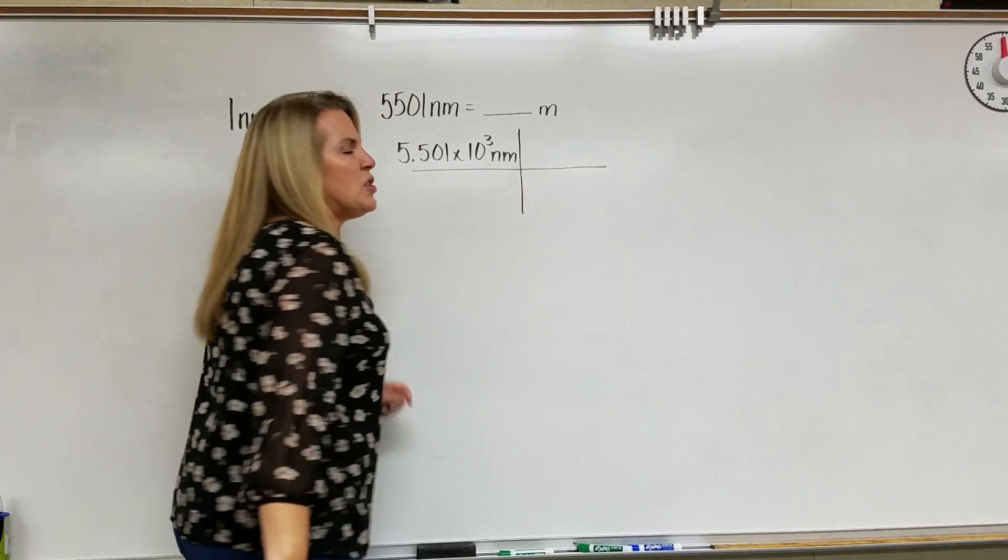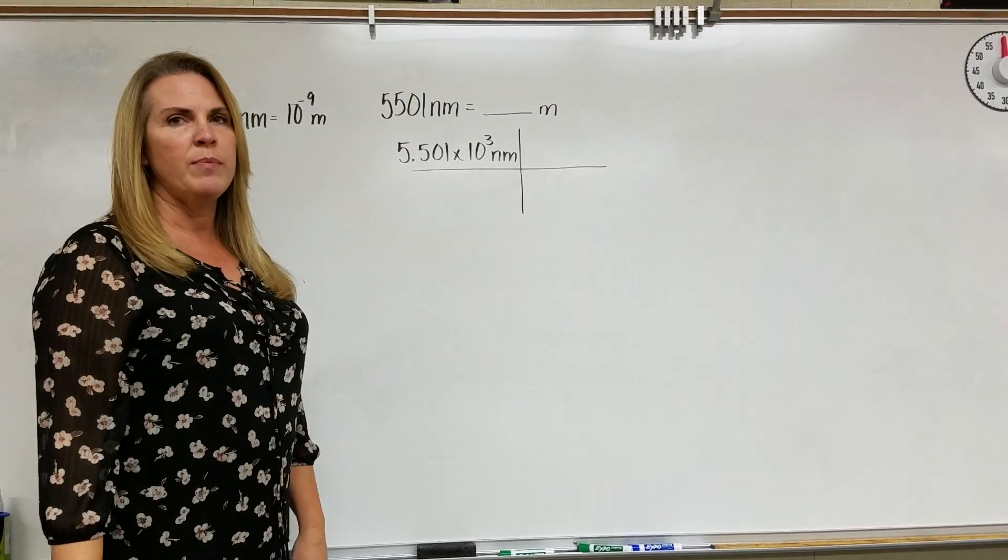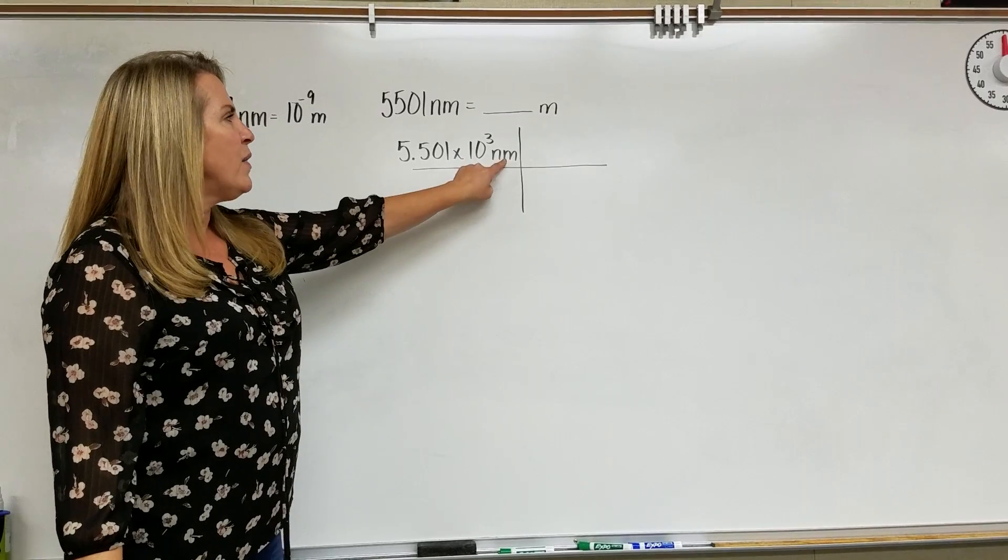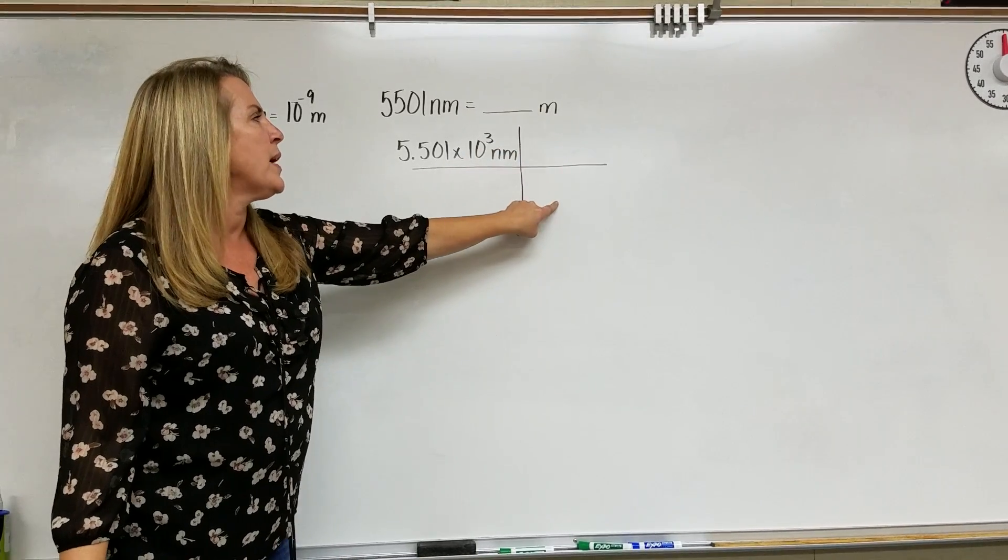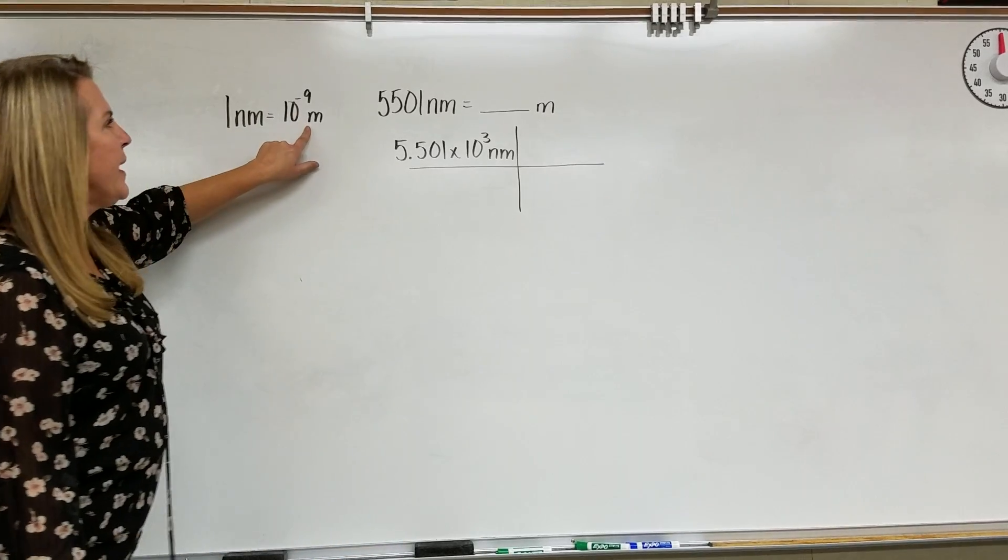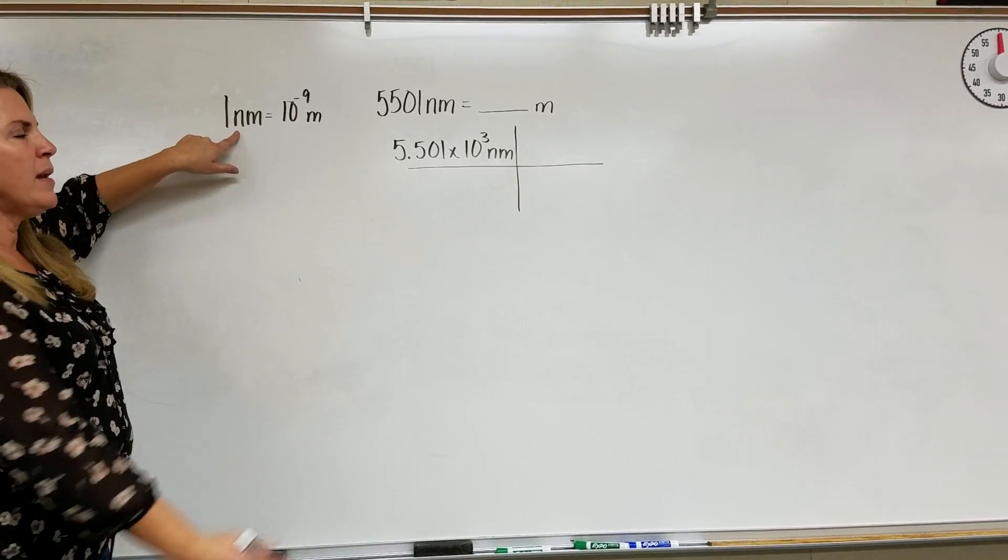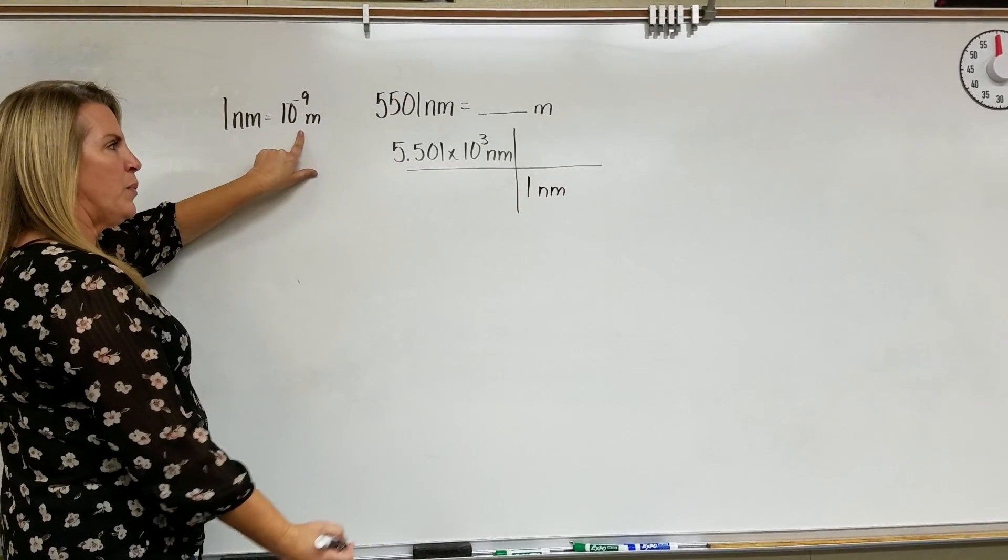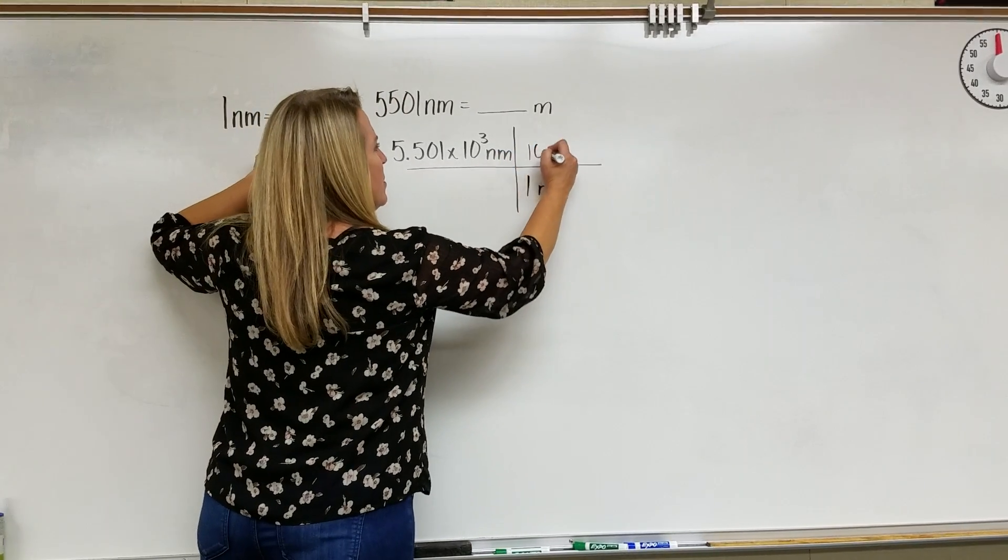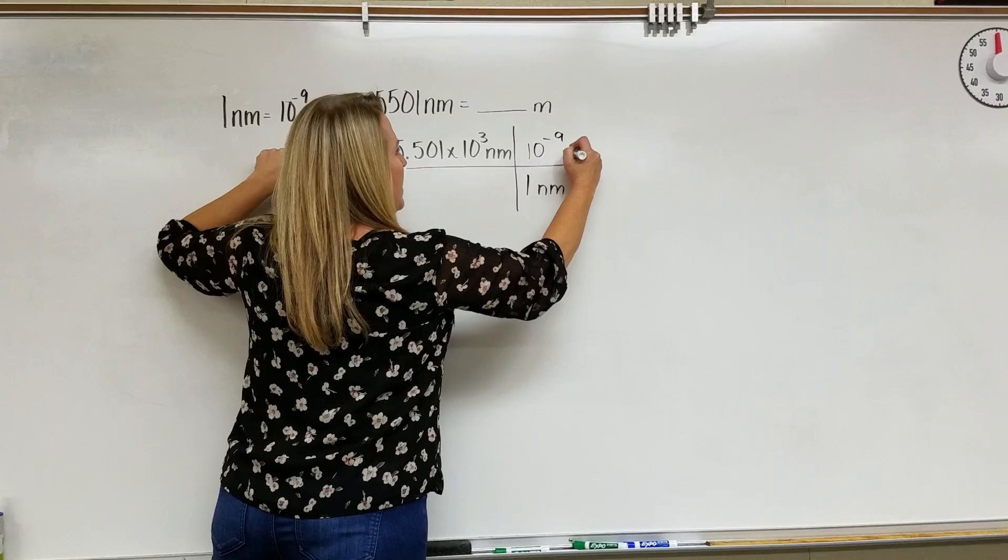Now that we have our relationship, we have a way to convert from nanometers to meters. If we have nanometers upstairs, this unit is driving what's going to go down here. So we will take our one nanometer downstairs and right above it, we will put our 10 to the minus 9 meters.